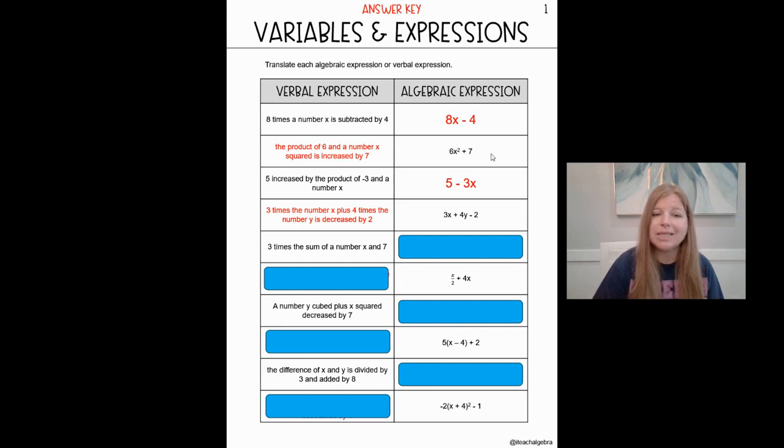Next one. 3 times the sum of a number x and 7. Now, notice this one doesn't say 3 times x. It says 3 times the sum of x and 7 together. So if I want to make sure I do 3 times the entire quantity of x and 7, I have to make sure I put parentheses around my entire x plus 7. And I know it's x plus 7 because I see that word sum, and sum means the answer to an addition problem. So my result would look like this. 3, open parentheses, x plus 7, close parentheses.